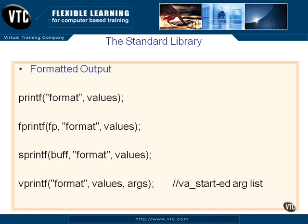Let's take a look at some formatted output. We've used printf a lot — the format works with percent s for a string, percent d for a decimal, and so on, followed by a variable number of values that must match the items in the format string. There's also fprintf, or file printf, which works exactly the same way as printf but takes a file pointer as the first parameter, then the format string, then the values. A printf is just an fprintf pointing to standard out — that's all that really happens when you make that call.